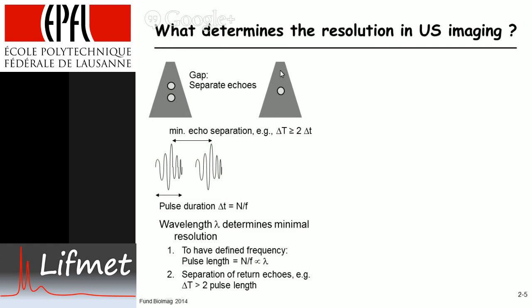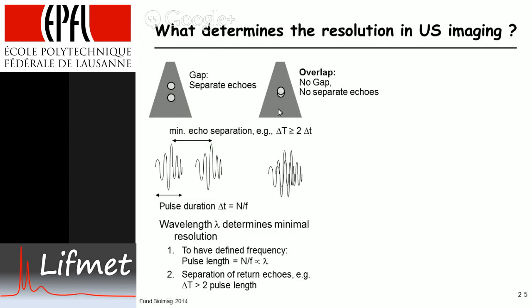Now consider the same situation with a second object that is closer. This will produce a second echo closer in time to the first, because the two objects are nearer to each other. If we have overlap — no gap, no separate echoes — what happens is the echo from the second object is slightly shifted but no longer enough for the software to distinguish the two echoes. It will treat this as one echo, and at that point the scanner is no longer able to separate out the two objects — resolution is lost.